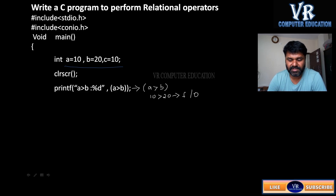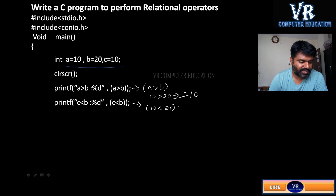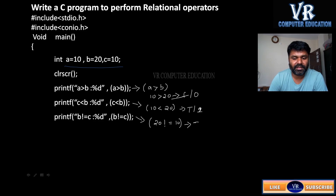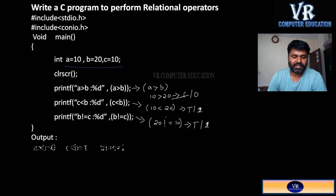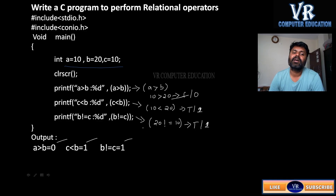Next one: C less than B. What is C value? 10. So 10 less than 20 — 10 is less than 20, it is true, or you will get 1. Next, B not equals to C. Let us check the results: first one is 0, next one is 1, and B not equals to C is 1. So like this, relational operators are executed.